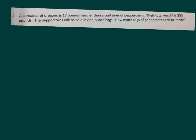A container of oregano is 17 pounds heavier than a container of peppercorns. Their total weight is 253 pounds. The peppercorns will be sold in one ounce bags. How many bags of peppercorns can be made? So it looks like we have different units. We have pounds and we also have ounces.